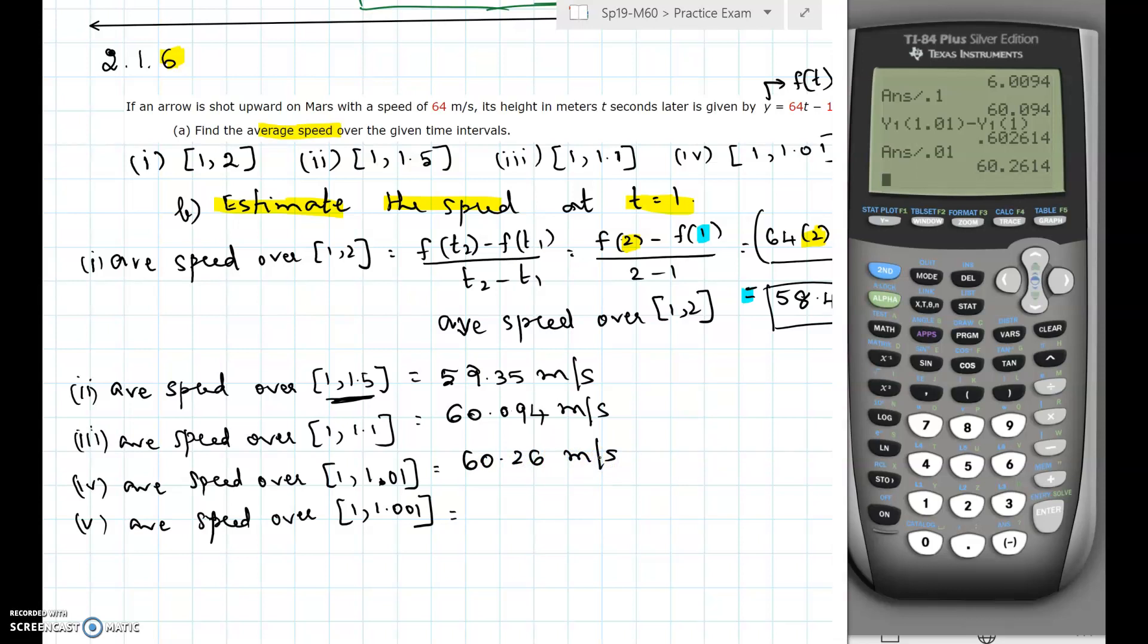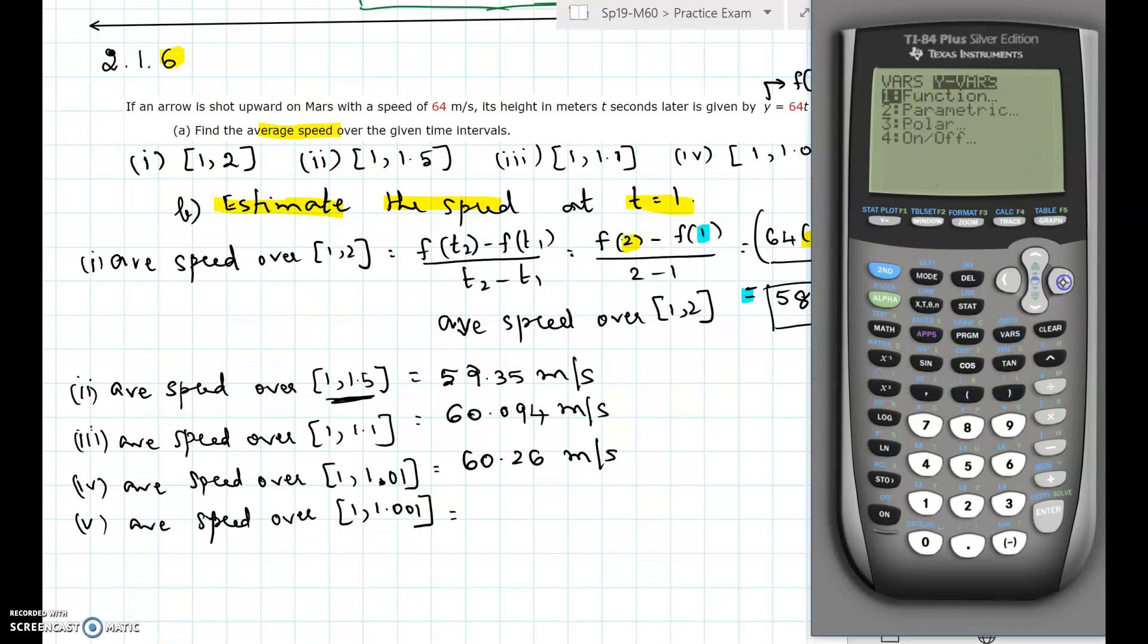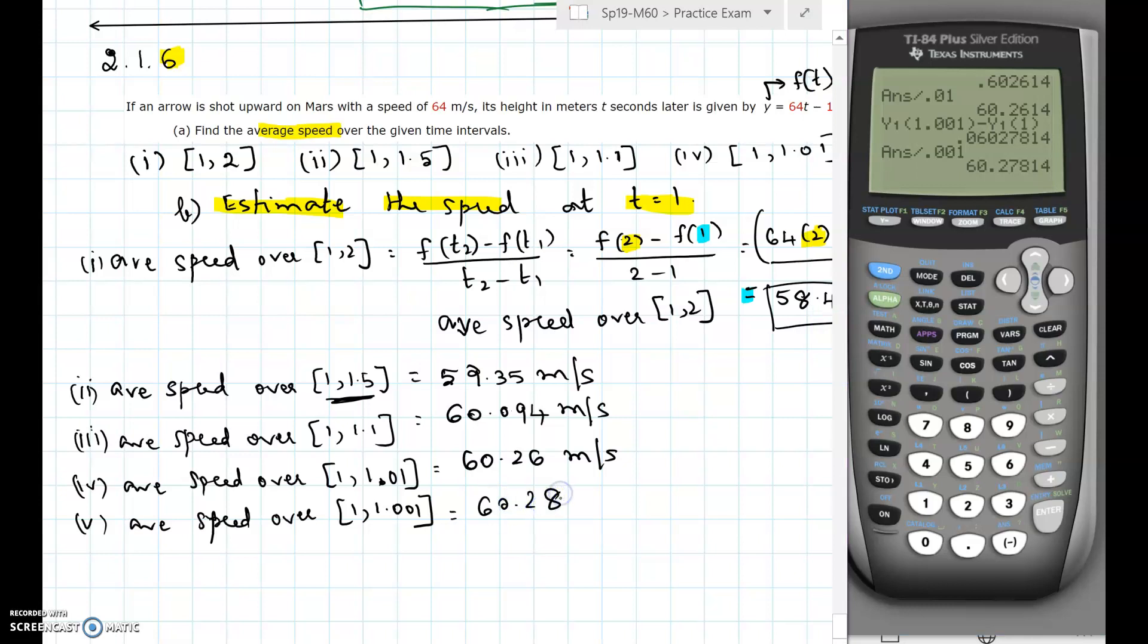Then the last one, average speed over 1 through 1.001. Click on VARS, YVAR, 1 again 1 that will give us y1. Evaluate at 1.001 minus y1 at 1 and divide that by the difference 0.001. Hit enter, that will be 60.28 if you reduce it to two decimal places.